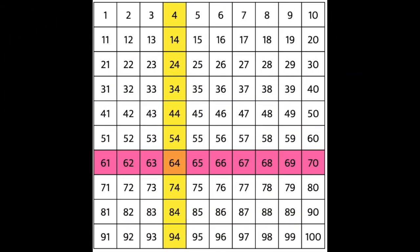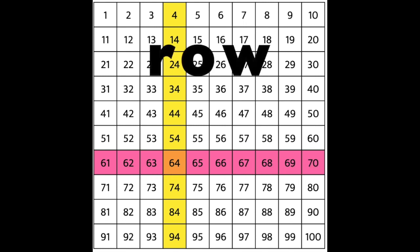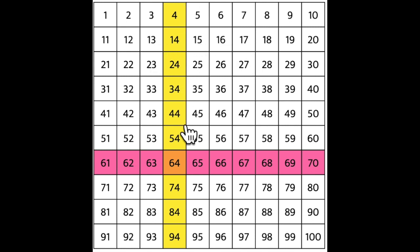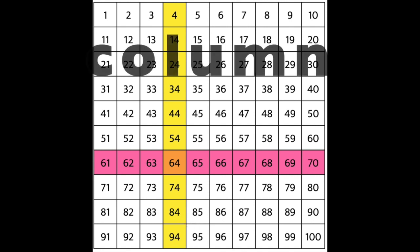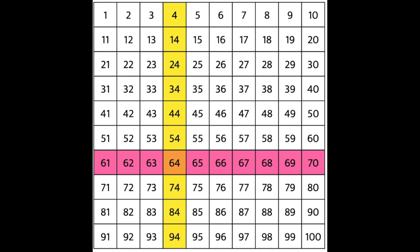In this 100s chart it has one of its rows colored in pink. Remember, a row is the part of the chart that moves from left to right. Then it has one of the columns colored in yellow. Remember, a column is the part of the chart that moves top to bottom.